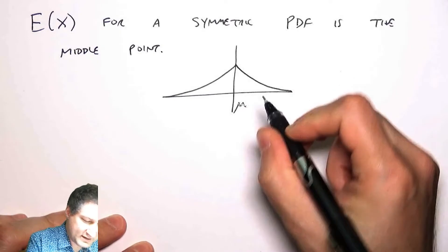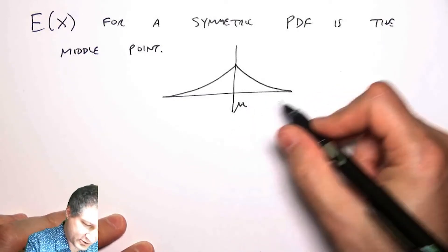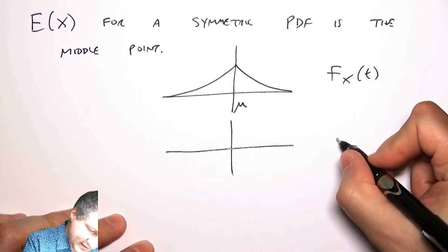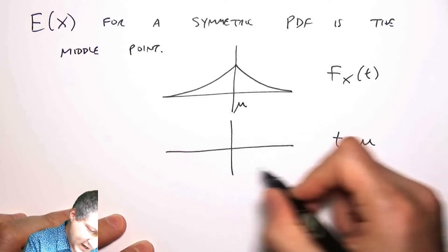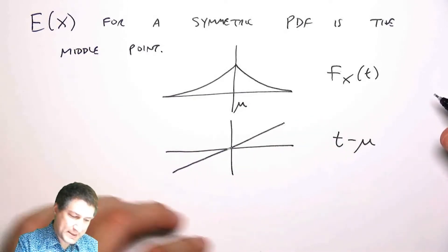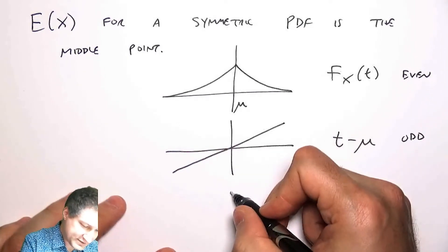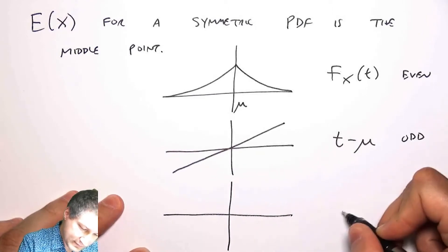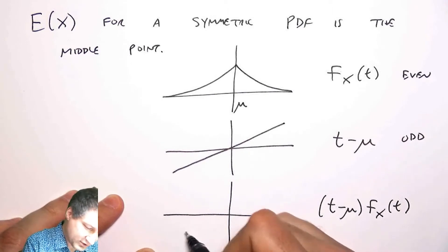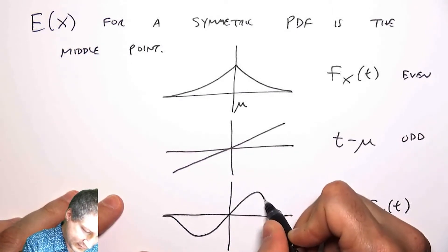And let's suppose that the symmetry point is mu, which I don't yet know is the mean. Then I could look at the function t minus mu. That looks like this. And this is kind of where I note that this is an even function, and this is an odd function. And so the product of these things